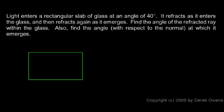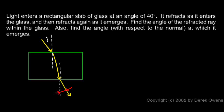In this example, light enters a rectangular slab of glass with an incident angle of 40 degrees. I'll draw that in — that's I, and I know I is 40 degrees. It refracts as it enters the glass, then it refracts again as it emerges, so there's a second refraction down here. I'll draw the normal so we can refer to the angles for the second refraction. We need to find the angle of the refracted ray within the glass, and also the angle at which it emerges with respect to the normal.